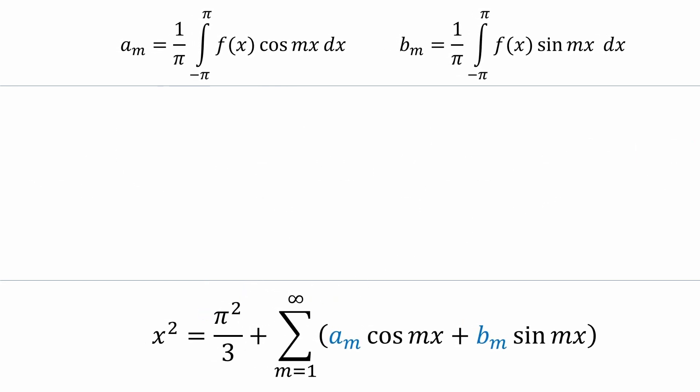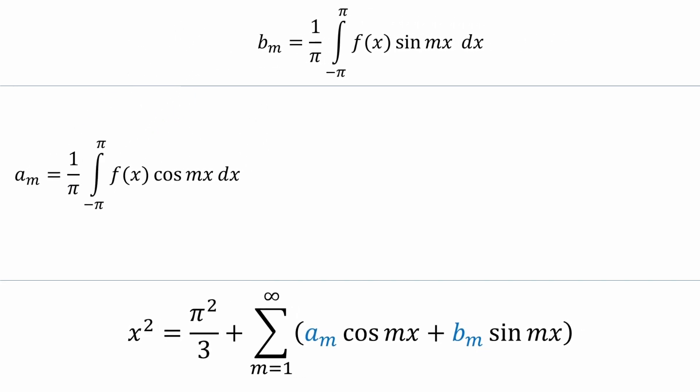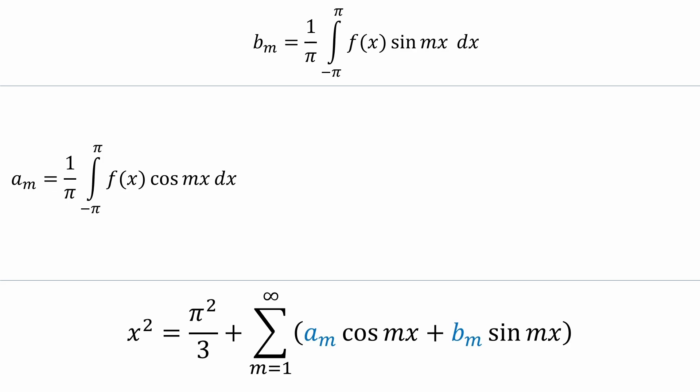Our Fourier series is starting to develop. Now let's work on aₘ. As before, we'll replace f with x squared. Notice that x squared times cosine mx requires integration by parts. Let's do our scratch work in this little box. u will be x squared, and dv will be cosine mx dx.